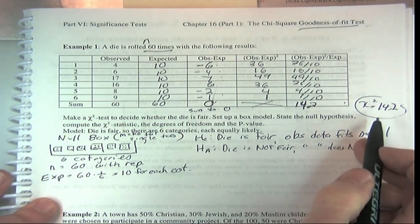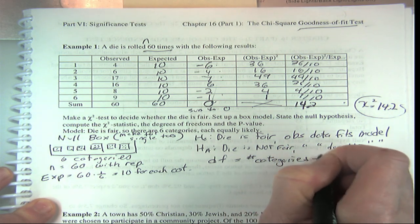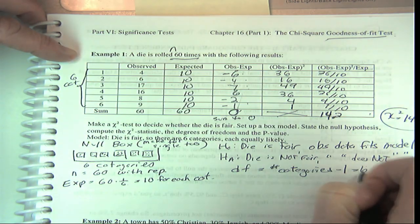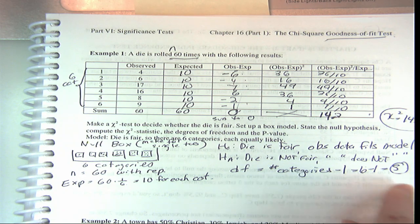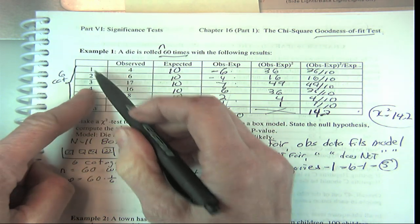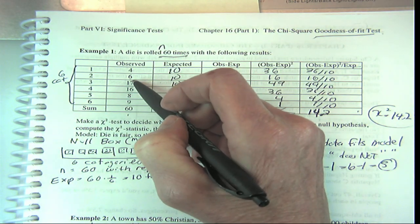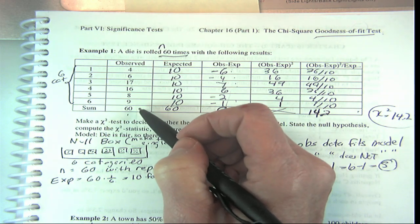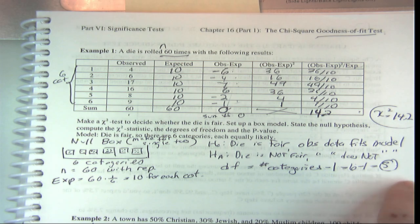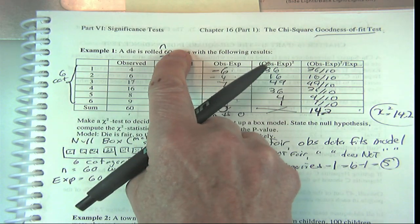The degrees of freedom is five because once you know five of the six categories, the last is determined — they have to sum to zero, so once you know any five differences the last is determined. We say there are five degrees of freedom: five categories are free to vary, but given n the last one is determined.